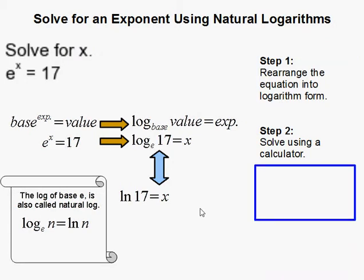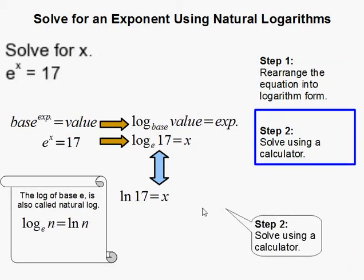And the last thing to do is punch it into your handy dandy calculator, and that becomes 2 and 833 thousandths, or a super duper long decimal that I've rounded to 3 decimal places. Make sure you know which decimal place your teacher wants you to round to before you finish, so you don't get in trouble. And that completes the problem.